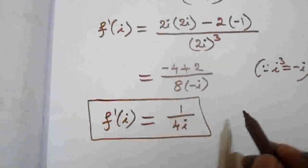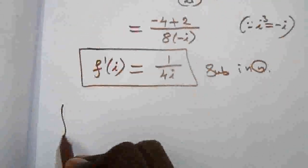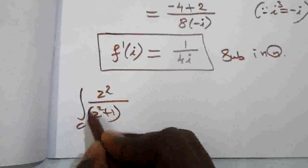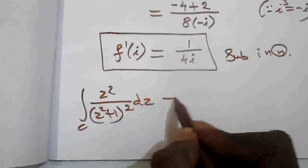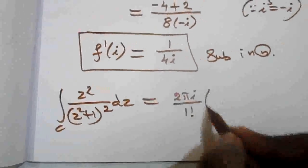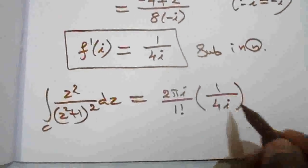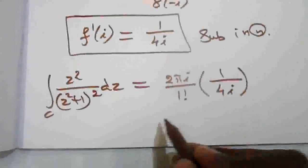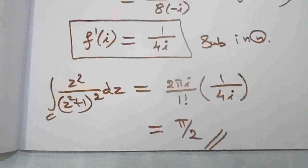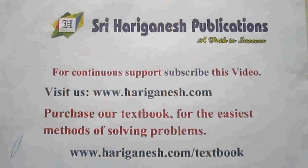Substituting into the formula: integral over c of z squared by (z squared plus 1) squared dz = 2πi by 1 factorial times f'(i) = 2πi times 1/(4i). The i cancels, giving the final answer π/2.